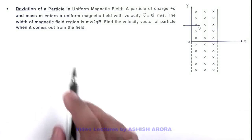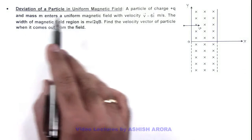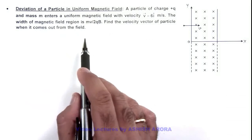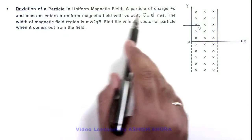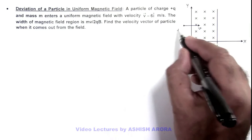This illustration demonstrates the deviation of a particle in uniform magnetic field. Here we can see a particle of charge +q and mass m.